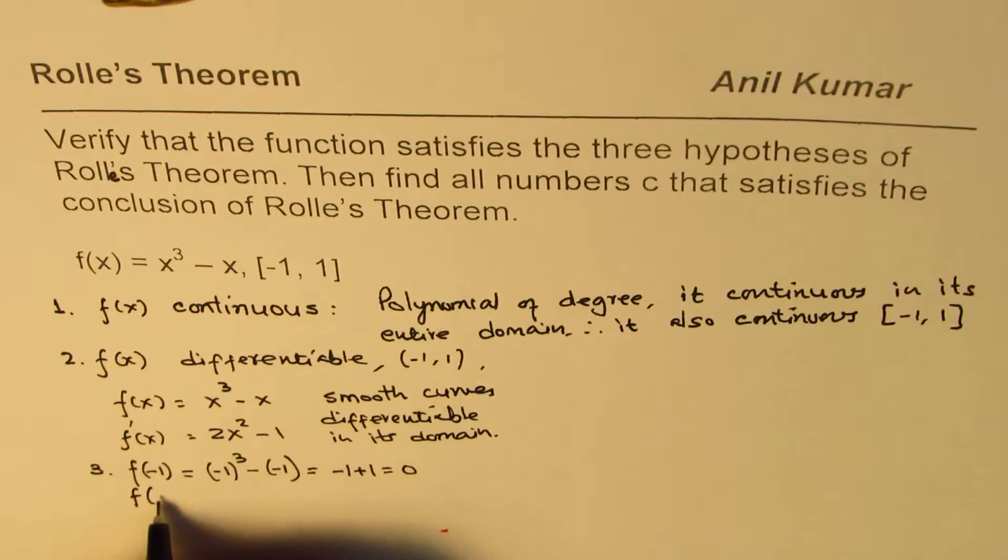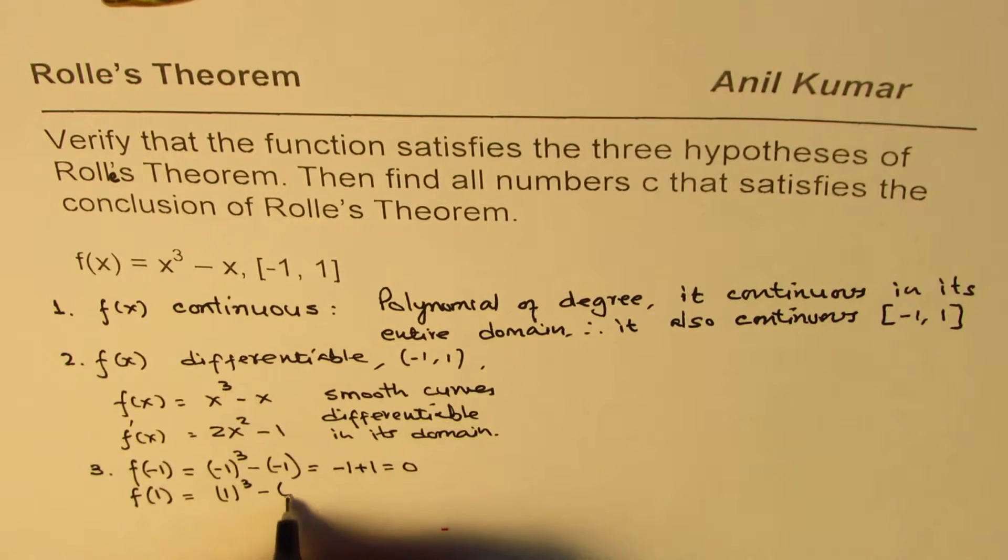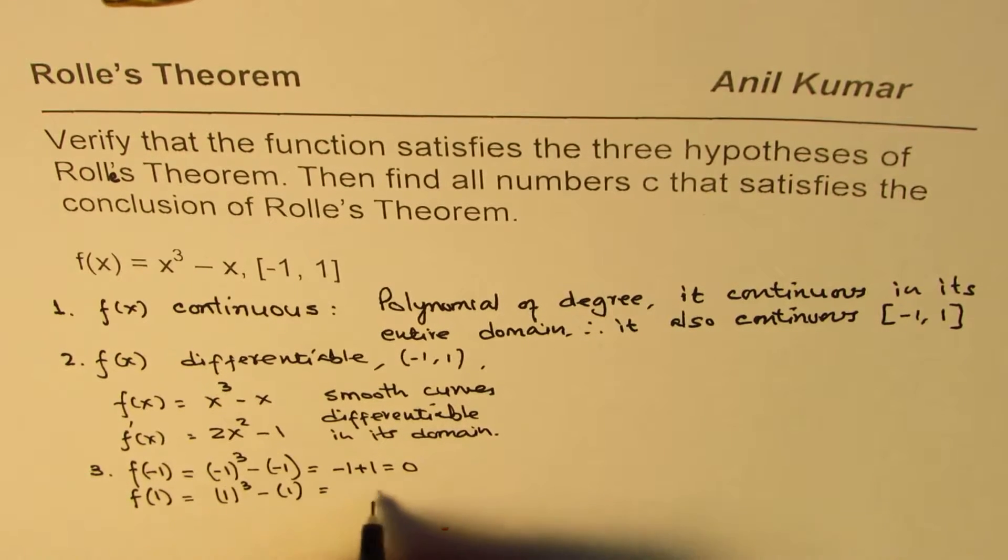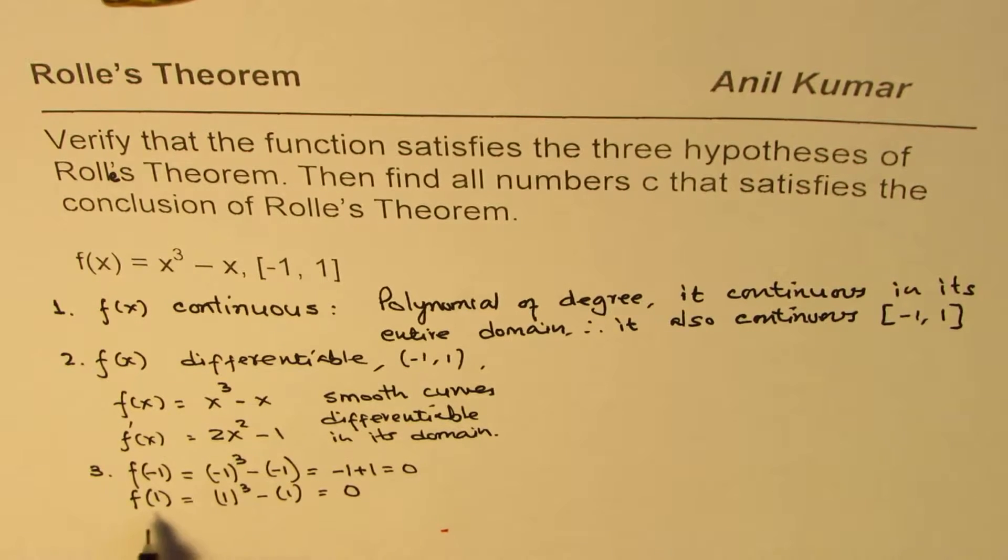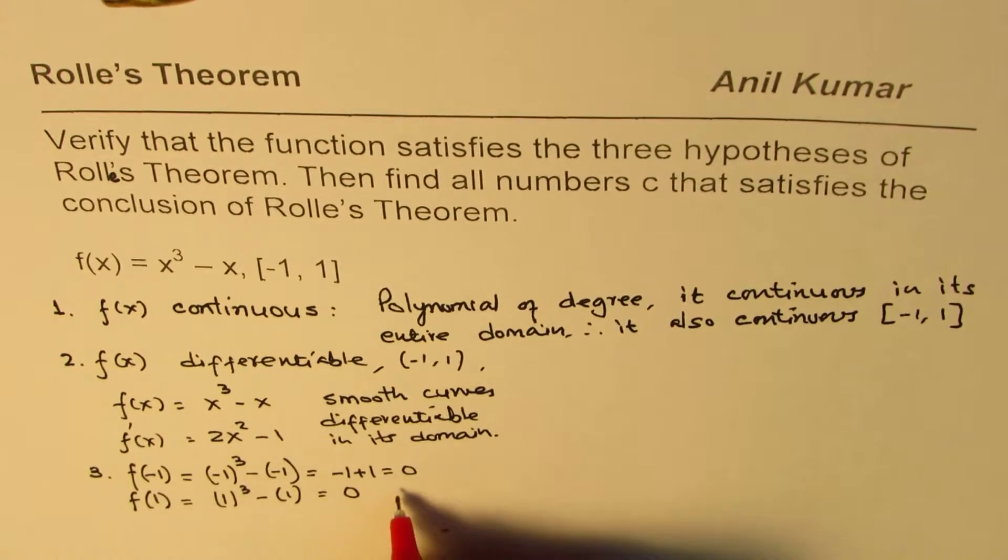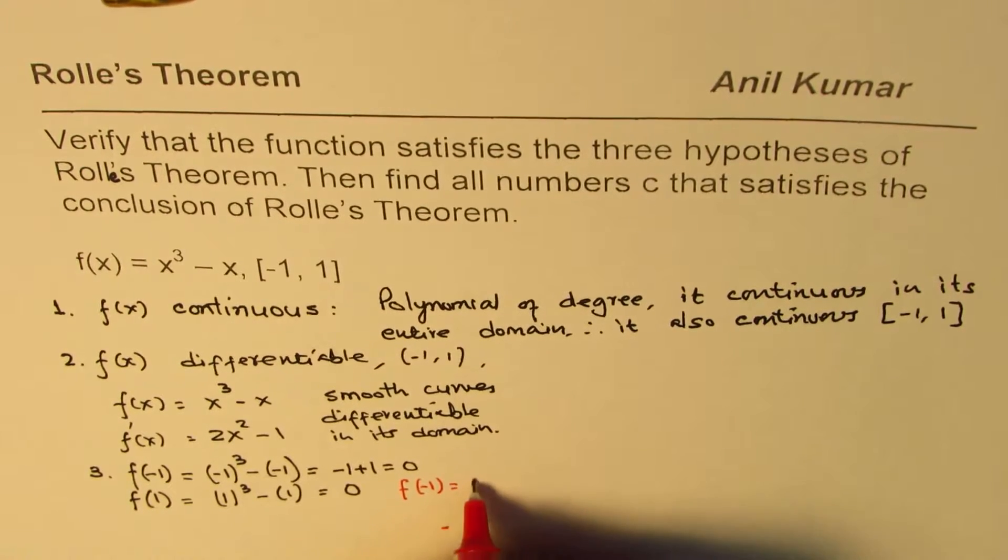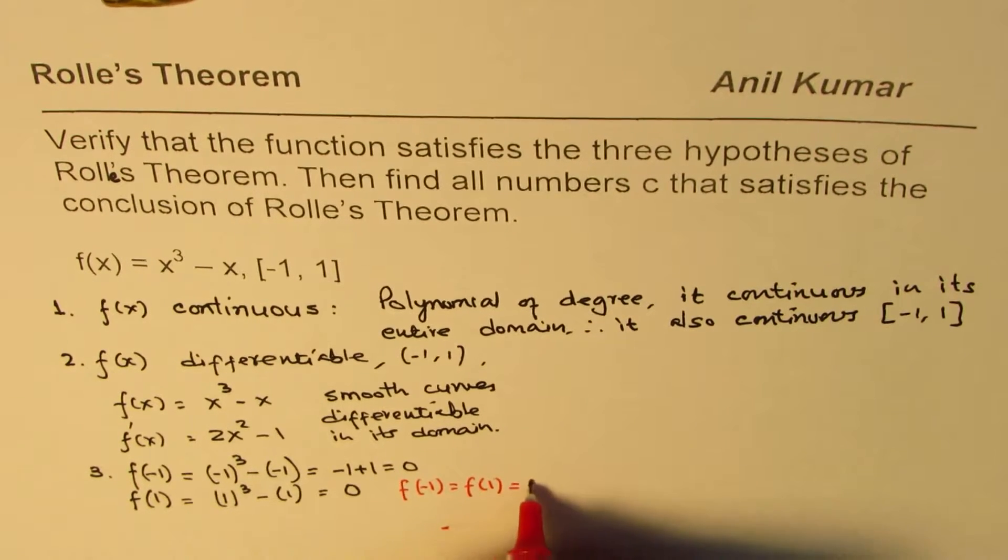Similarly, what is f(1)? If I substitute 1 here I get 1³ - 1 and that is also equal to 0. So what we see here is that f(-1) = f(1) and both are equal to 0.